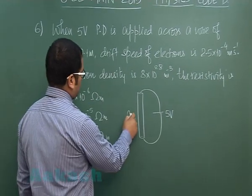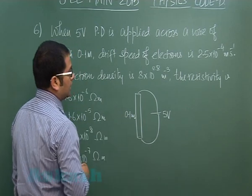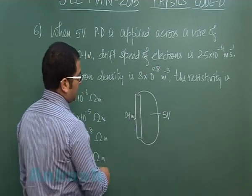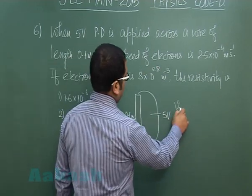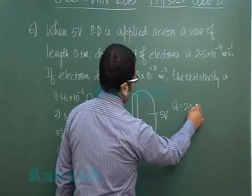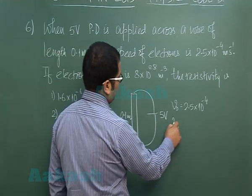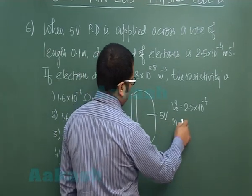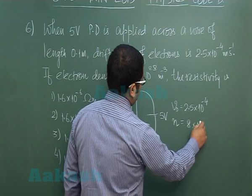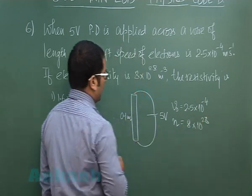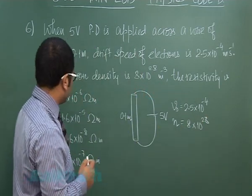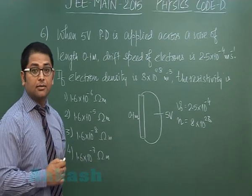The length is 0.1 meter. Drift speed has been given that's 2.5 into 10 raised to the power minus 4 meter per second and electron density which we commonly denote by small n that's 8 into 10 raised to the power 28 and based on this we need to calculate the resistivity of the material.